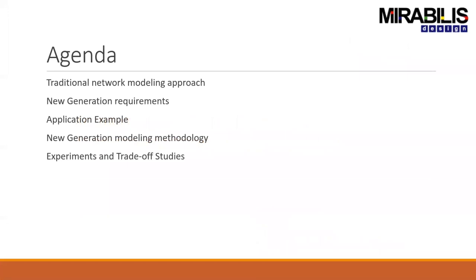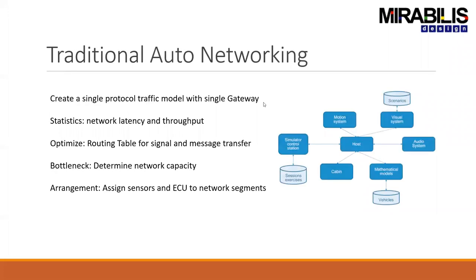I'm going to start off with a traditional approach and then go into what's needed for the new generation of requirements, while looking at application examples, methodologies, and experiments. If you look at the traditional auto networks, you had a single CAN network or a LIN network with a single gateway, connecting all the different devices across this gateway.